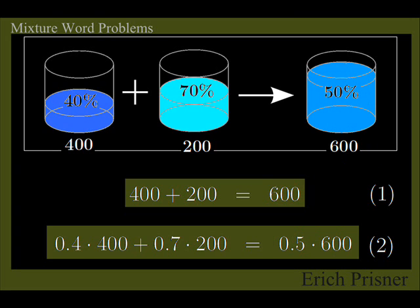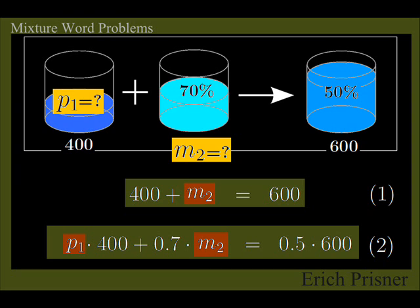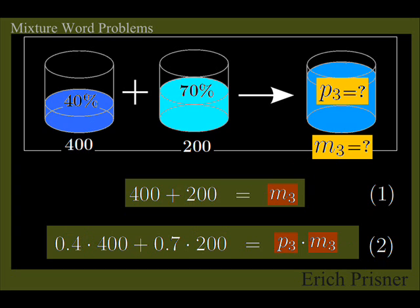In fact, if we start with any six valid values, like our 400, 200, 600 mg and 40, 70, 60%, each such combination of hiding two of the six quantities and revealing the other four gives a possible version of a mixture problem.